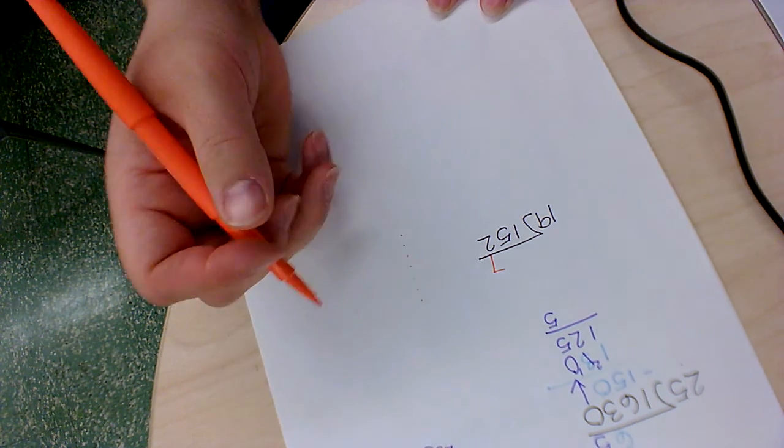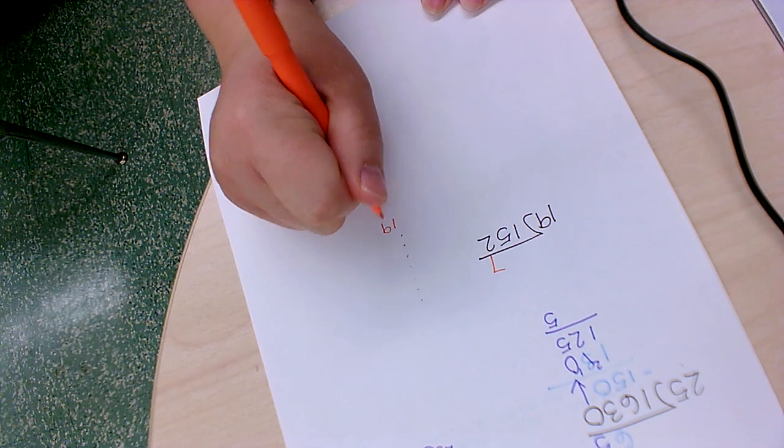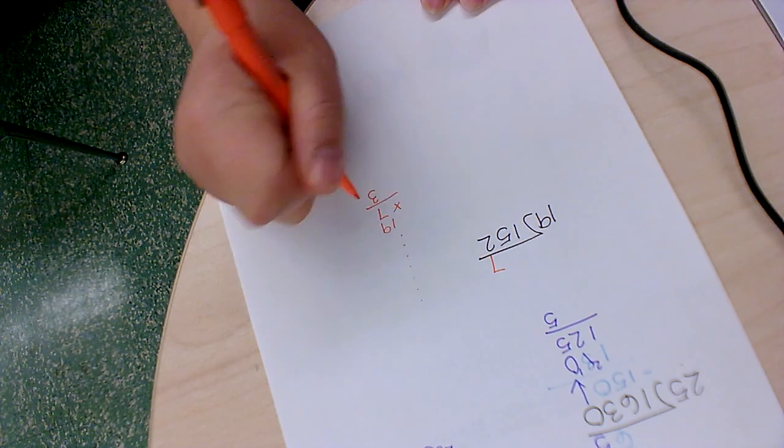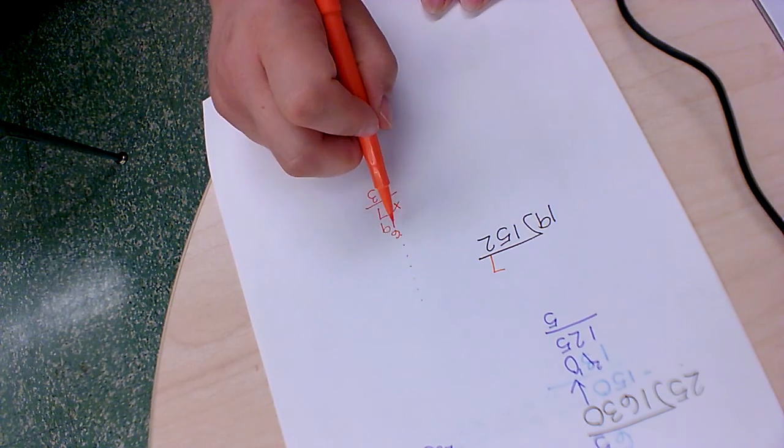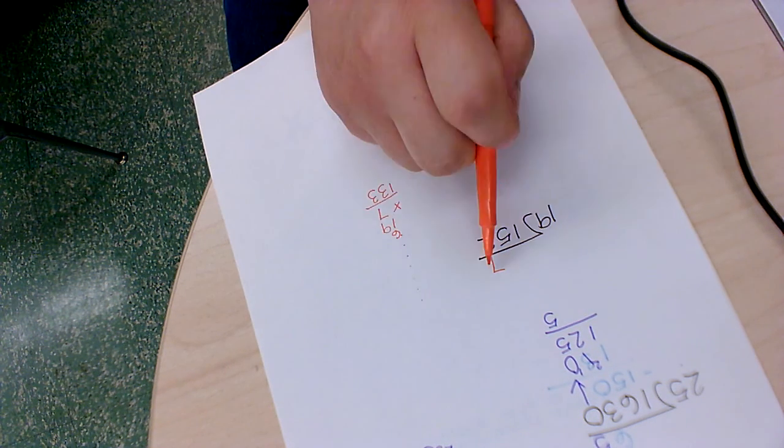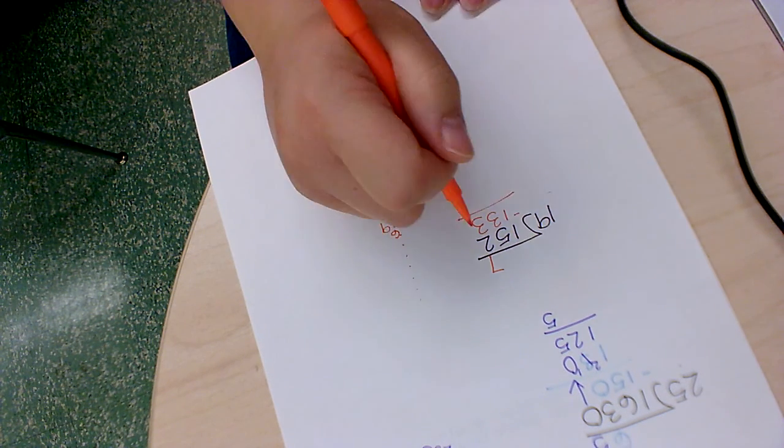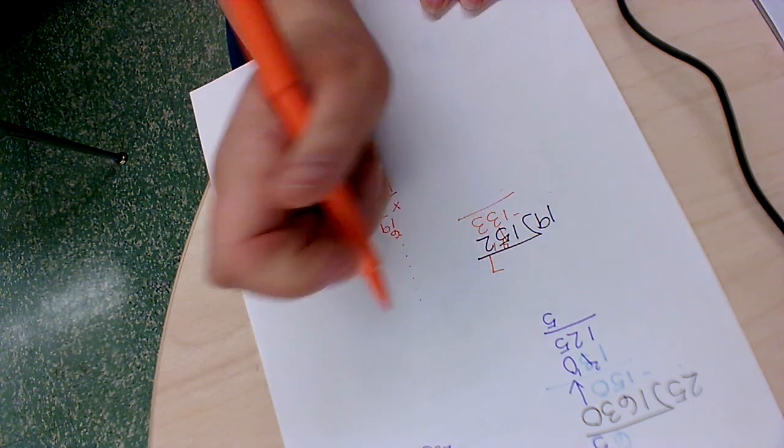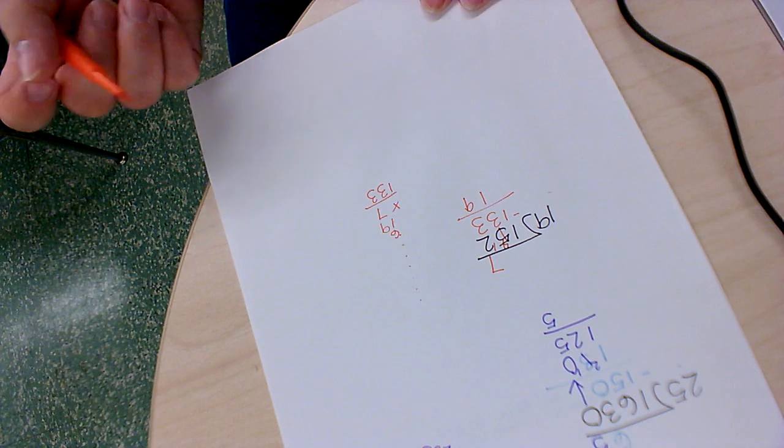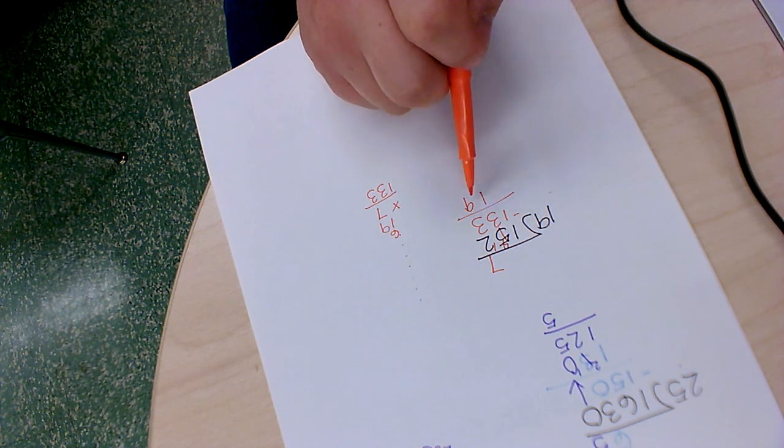So 7 times 20 is going to be 140. Now 7 times 9 is 63. And then 7 times 1 is 7. But I have to add my 6. So 13. So 7 times 19 is 133. Now we subtract. I need to borrow. So 9, 1, 19. And I know I'm not right because I can make another group.